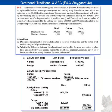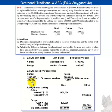We have two activity cost pools — cutting and design — with cost drivers of machine hours and number of setups. The estimated overhead is $300,000 and $600,000 respectively. To determine the activity-based overhead rate for cutting, we take $300,000 divided by the total 200,000 machine hours, which gives us an activity-based overhead rate of $1.50 per machine hour.